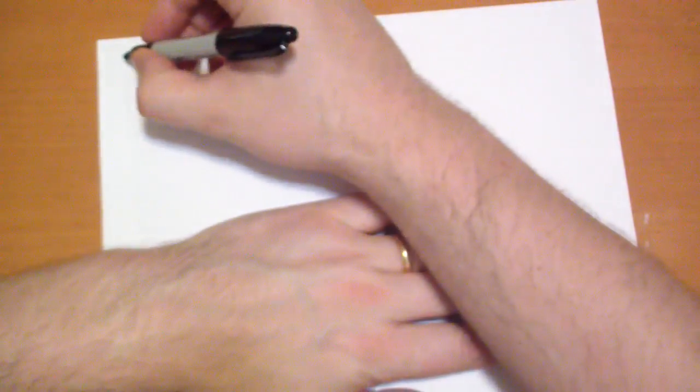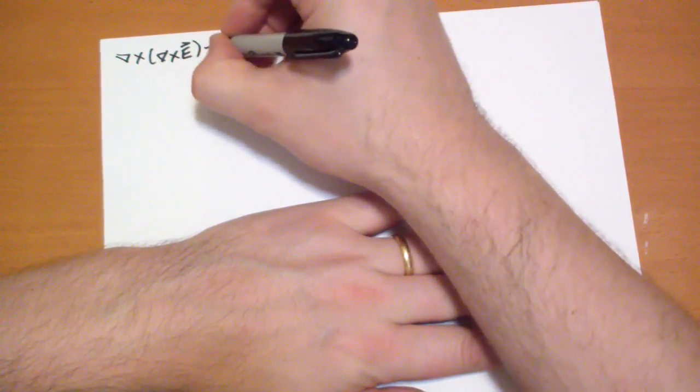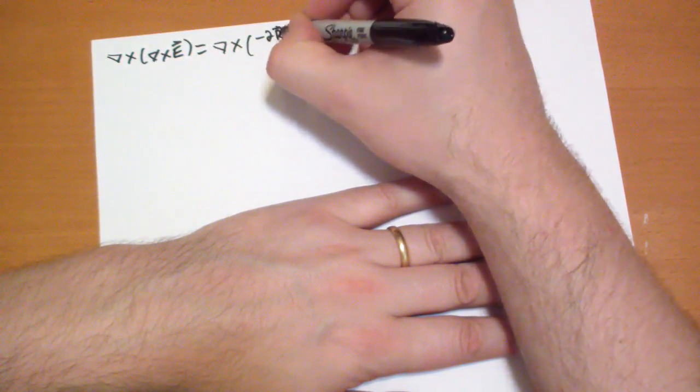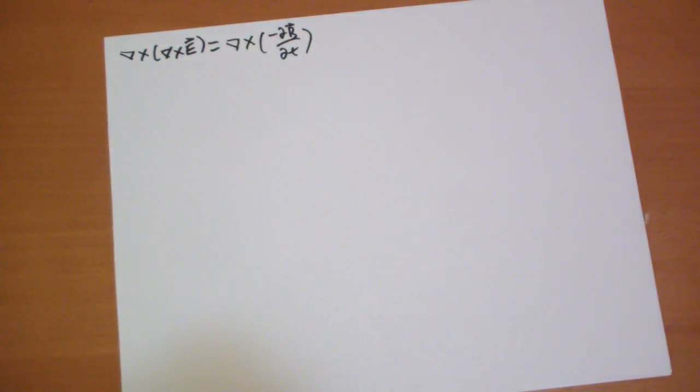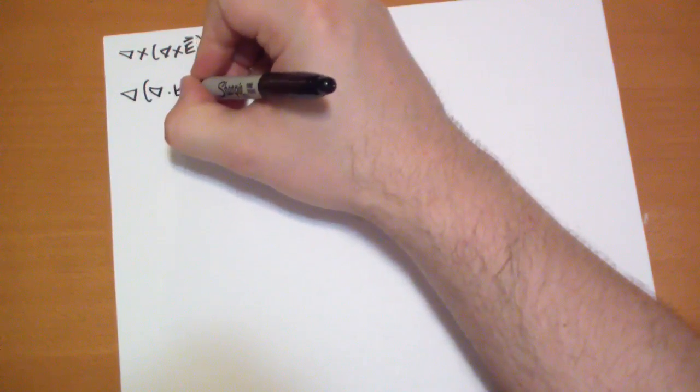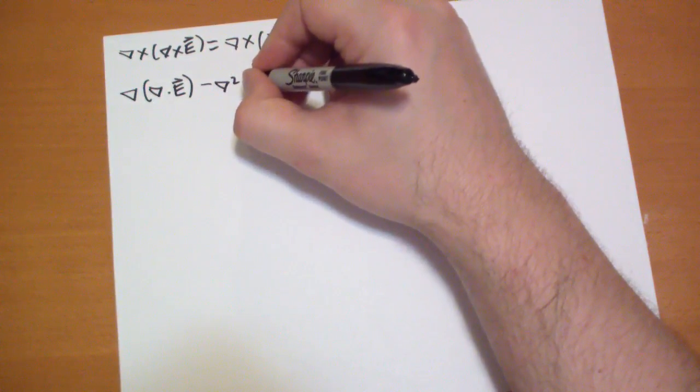Let's work out what happens when we take the curl of the curl. So the curl of the curl is equal to the curl of the B field. The curl of a curl let me flip to the book here is the gradient of the divergence minus the Laplacian of the field.